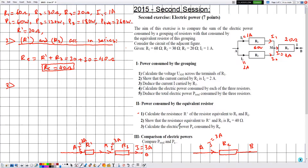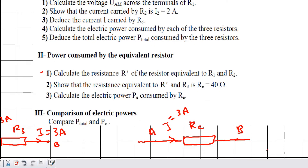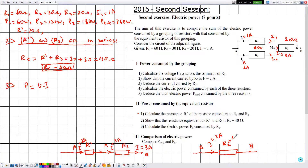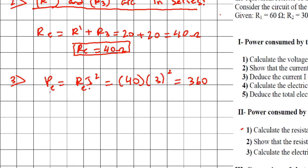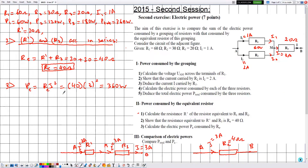In number three, calculate the electric power Pe consumed by Re. P = U × I, but we don't know voltage UAB across Re. However, we know the current traversing Re and the resistance Re = 40 ohms, so we use the already-proved relation P = RI². Pe = Re × I² = 40 × 3² = 40 × 9 = 360. Since R and I are in SI units, P is in watts. Therefore Pe is equal to 360 watts.